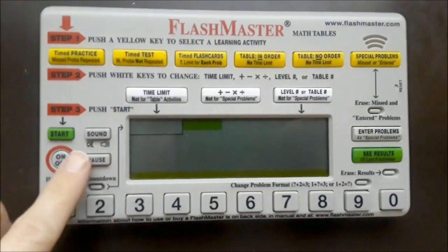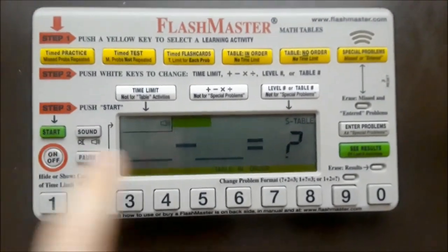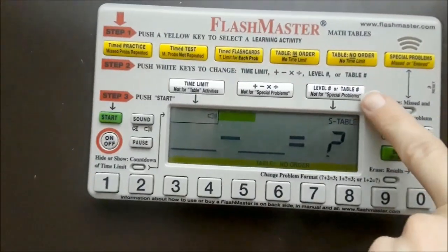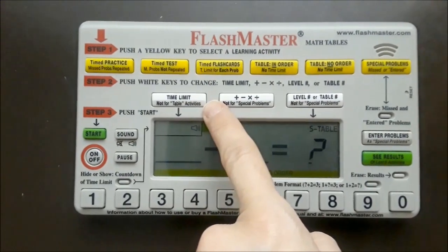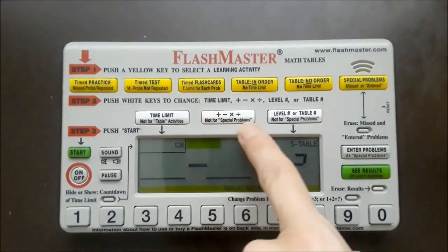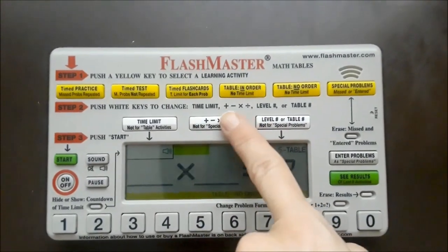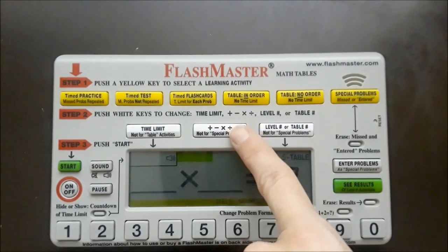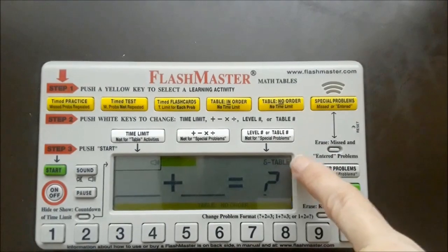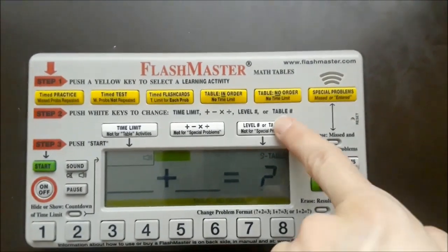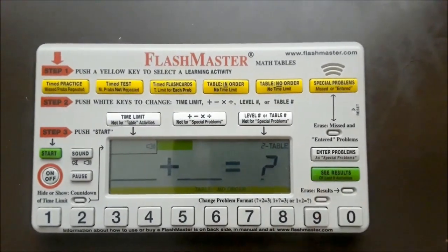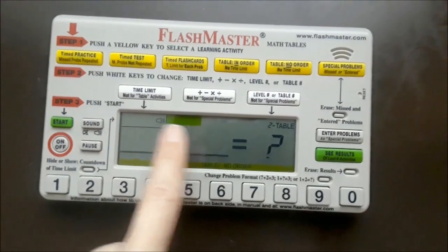So let me take this over here and just do a quick example so you can see what I'm talking about. All right, turn it on. I'm going to do table, in order. Okay, if you do a test or flash cards, you can set a time for it and you can say whether you want it to be addition, subtraction, multiplication, or division. You can select the table number or the level number of difficulty. So we'll do plus 2, and then you just start. You can also turn sound off and on.